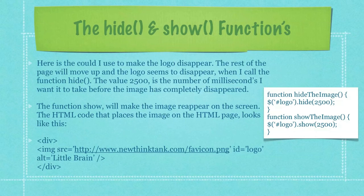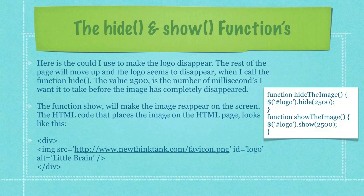Here is the code I used to make the logo disappear. The rest of the page will move up, and the logo seems to disappear when I call the function named Hide. The value 2500 is the number of milliseconds I want it to take before the image has completely disappeared. The function Show will make the image reappear on the screen. The HTML code that places the image on the HTML page looks like what you can see here in the third bullet item, this div that I've defined down here.